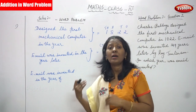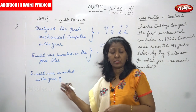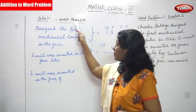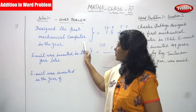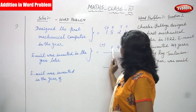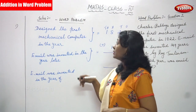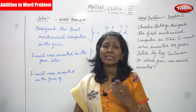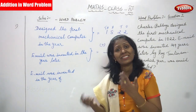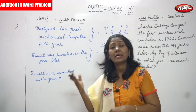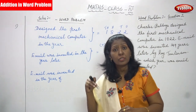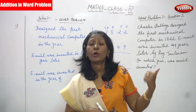First you have to decide whether it is addition or subtraction. This sum is addition. So how can we say it is addition? The first mechanical computer was designed in the year 1822 — that's the first point. The second point: email was invented later, that is 149 years later. But we don't know which year, so we have to find out.